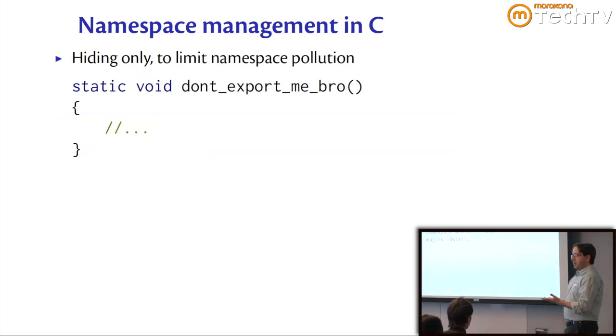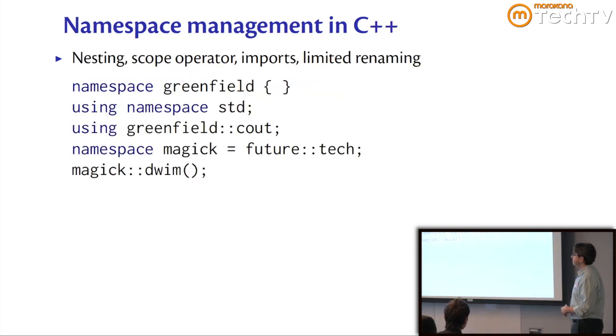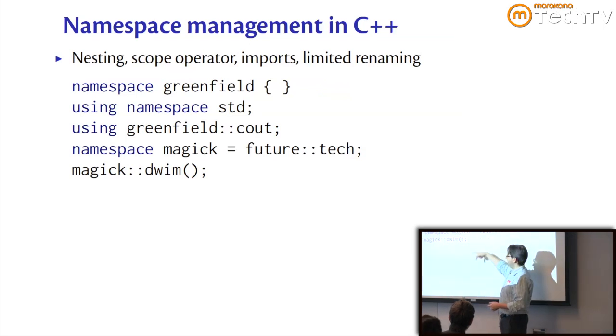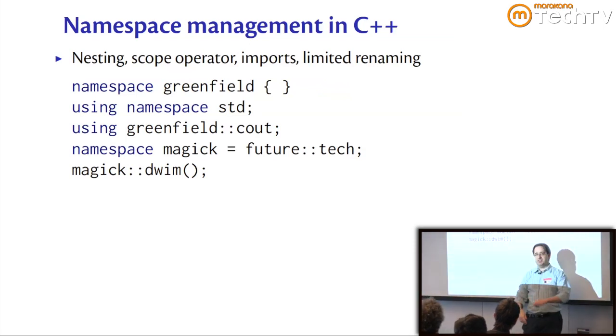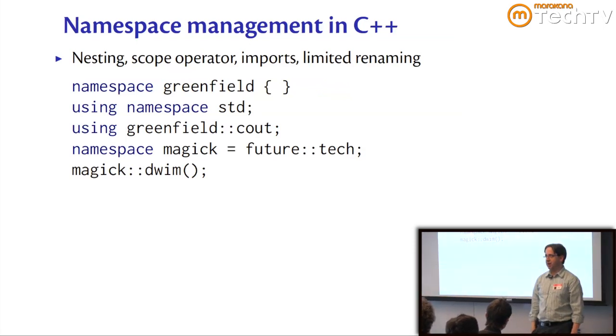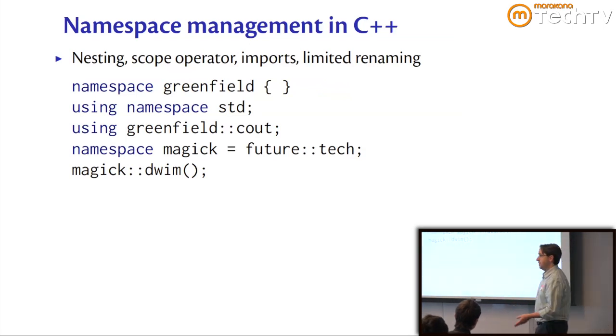When we move to C++, namespaces are something that got a lot richer. We have syntax for namespaces that can enclose things. We can import them, import just particular members, we can rename them. And then we've got this scope operator that can reach in just like a dot operator in more modern languages. So namespace management in C++ is fairly rich.